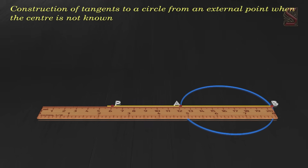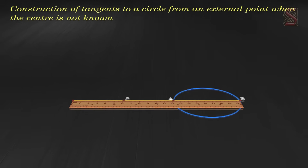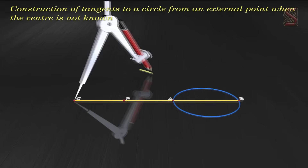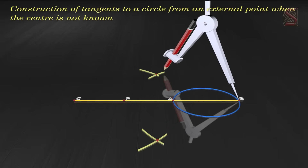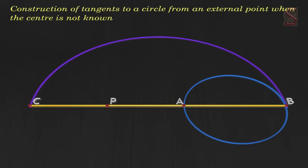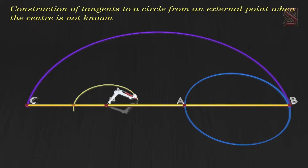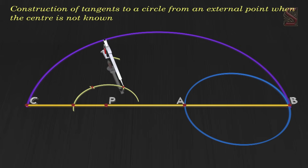Step 3: Produce AP to a point C such that AP equals PC, that is P is the midpoint of AC. Step 4: Draw a semicircle with BC as diameter.